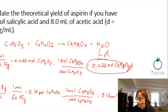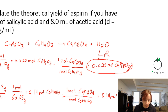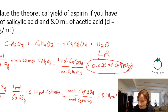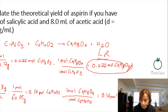We use the limiting reagent value to calculate theoretical yield. Starting with 0.022 moles of aspirin, we multiply by the molecular weight of aspirin, which is 180.16 grams per mole. The moles cancel out, so theoretically, if we added 3 grams of salicylic acid and 8 milliliters of acetic acid and everything went perfectly, we would end up with 3.96 grams of aspirin.